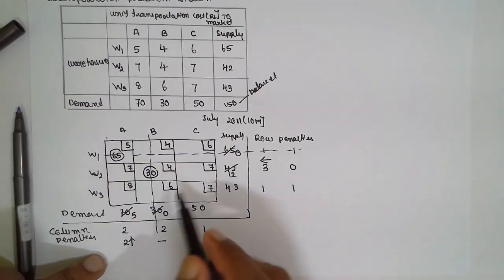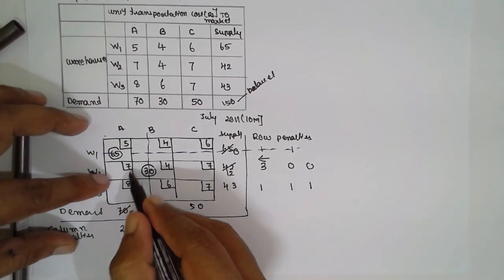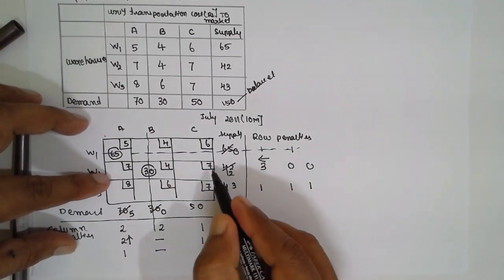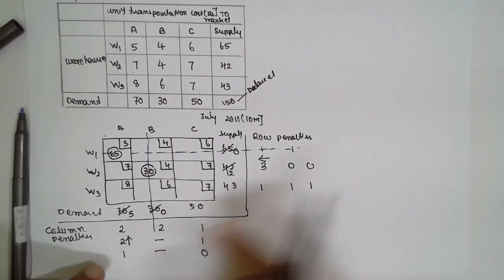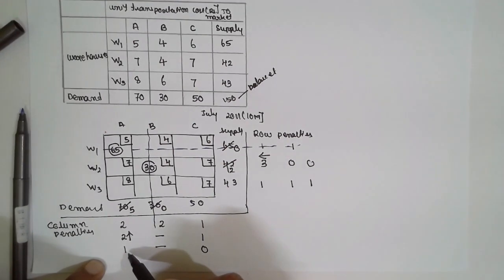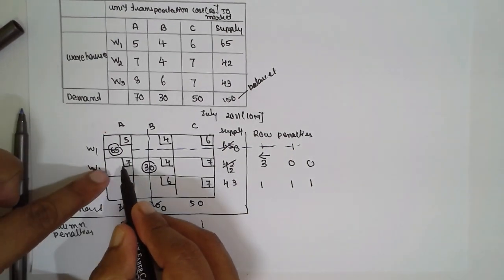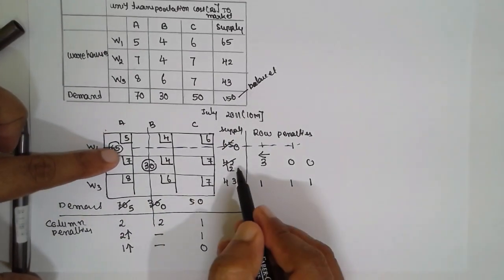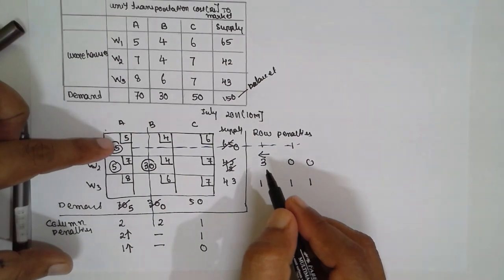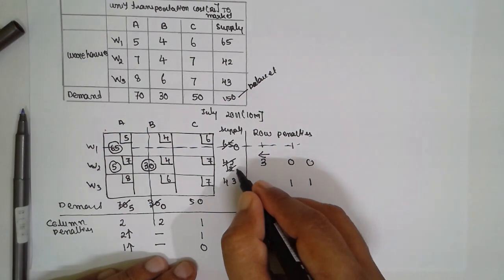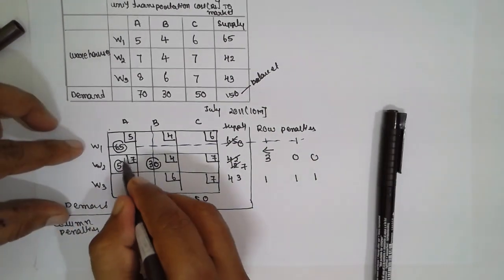Next iteration: 7 minus 7 equals 0; 8 minus 7 equals 1; 8 minus 7 equals 1; 7 minus 7 equals 0. Select the larger value among column and row penalties — both have value 1, so select either. I will select this one. The smallest cost is 7. Supply is 12 and demand is 5; write 5 here. Subtract 5 from 12, leaving 7. That demand becomes 0, so eliminate that column completely.